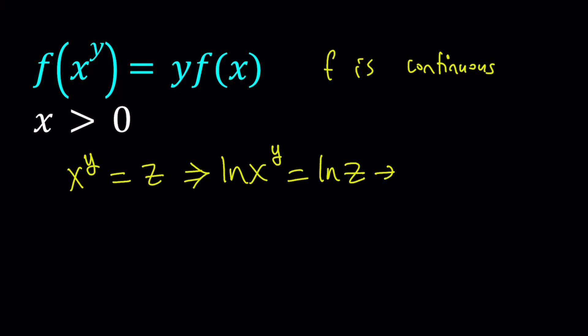From here we can do the following using power property. We can move the y to the front and write this as y ln x equals ln z. This is nice because it allows you to isolate y and write it in terms of x and z.